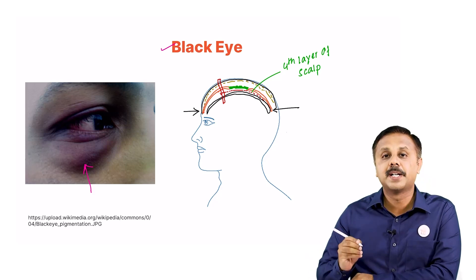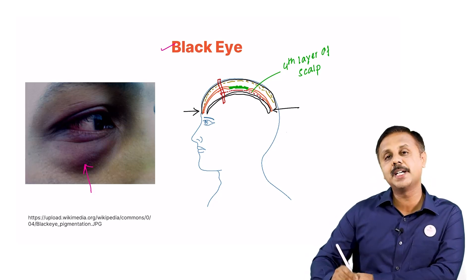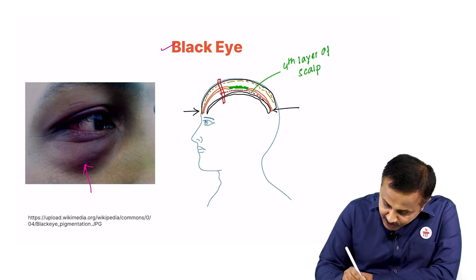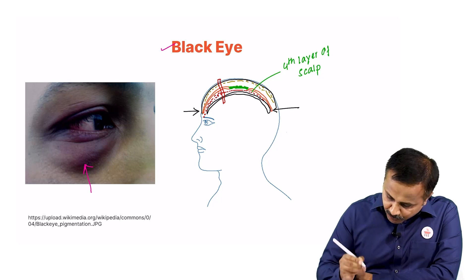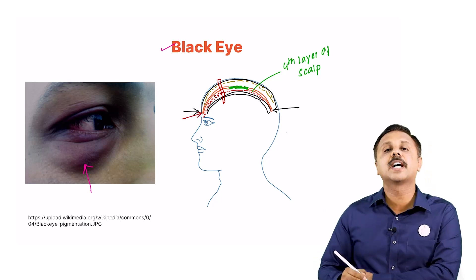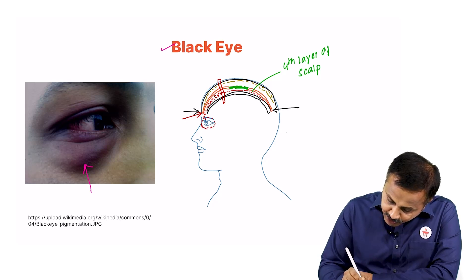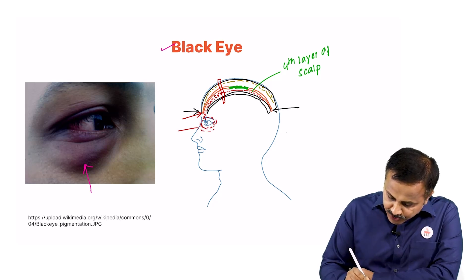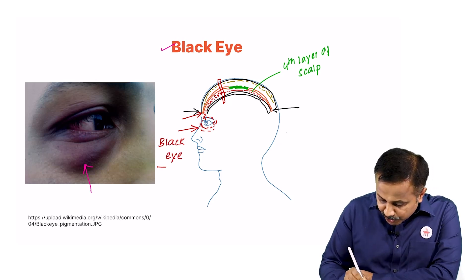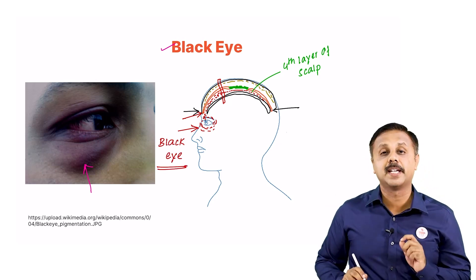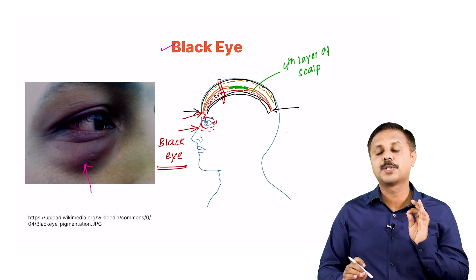The blood can freely flow forwards because the frontal belly has no bony attachment, and it collects over the tissue space of the eye, resulting in black eye. So this is the anatomical basis for formation of black eye — the absence of bony attachment to the frontal belly of occipitofrontalis.